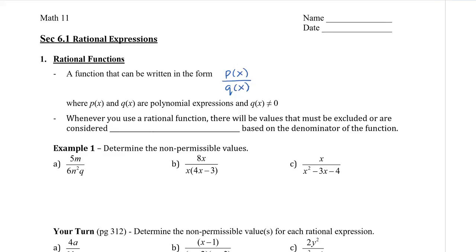This leads to looking at some special values. Whenever you use a rational function, there will be values that must be excluded, which are considered non-permissible, and this is based on the denominator. Thinking back to radical functions, when you take the square root or any even root, you look at the radicand — the inside of the root. For rational functions, we need to take a look at the denominator.